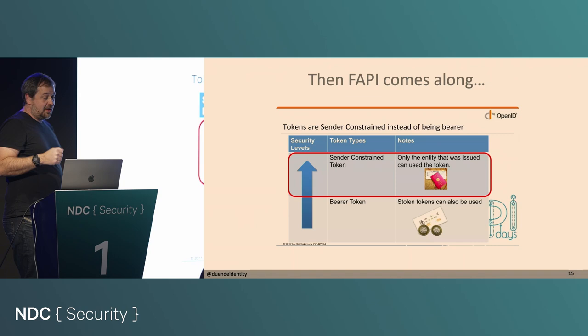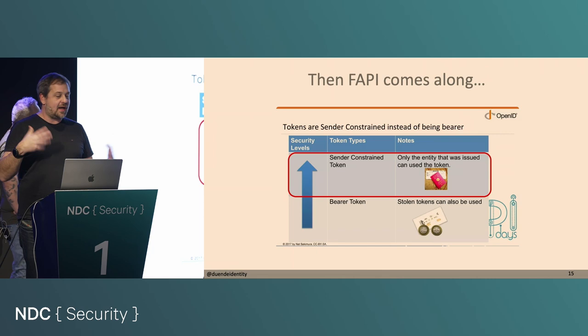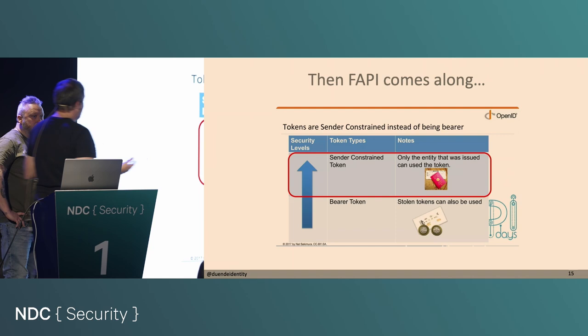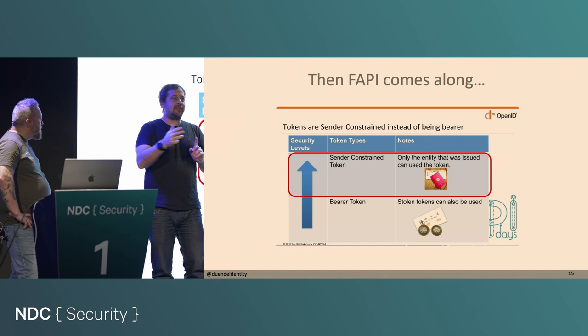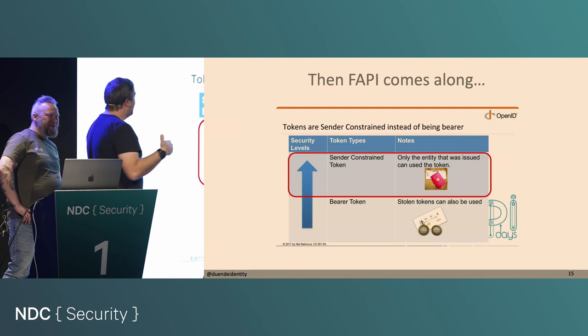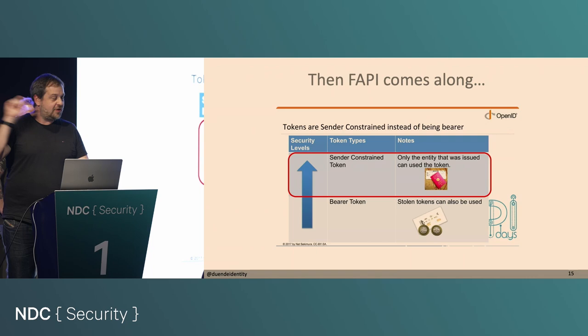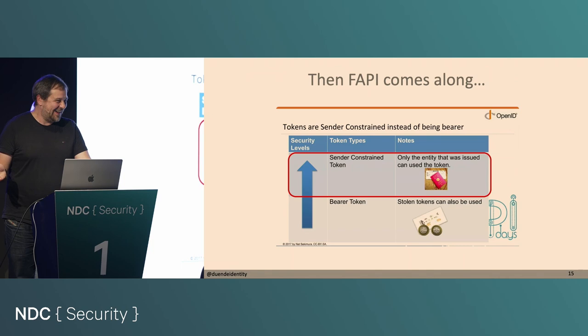A couple of years later, this FAPI thing happened. FAPI stood for Financial APIs. Now banks start using OAuth, and they needed something more secure. Banks were mandated to implement FAPI or PSD2 by around September 2019 — you weren't allowed to play if you didn't. And the only way to be FAPI compliant was to use proof of possession tokens, which didn't exist.